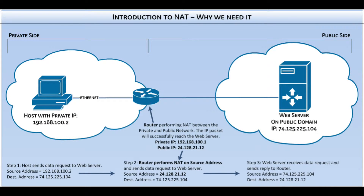To do this, a routing device is needed. Its place in the system is located between the two networks — in this case the private and public network. When a data packet enters this router from the private side, the NAT functionality will modify the packet's source IP address and replace it with the router's public IP address, as seen in Step 2. Once the source address is changed to a public IP address, it is now routable on the public domain and can reach the web server.